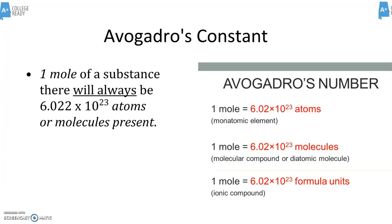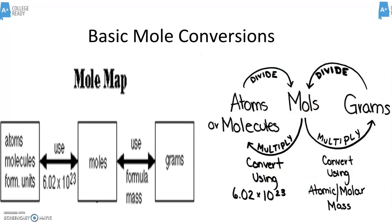The last one is formula units. So for an ionic compound, one mole is equal to 6.022 to the power of 23 formula units of that compound.